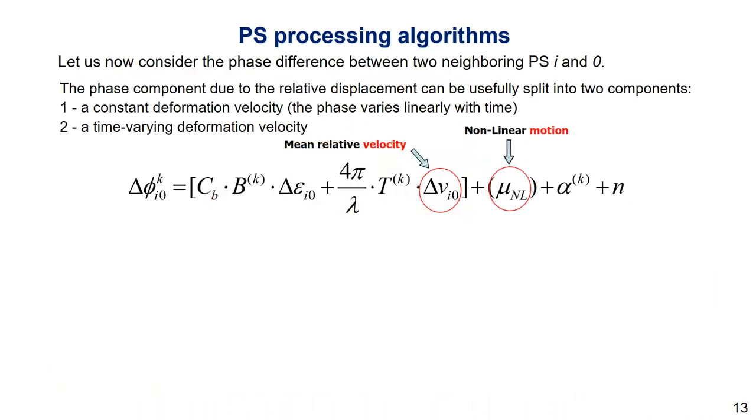Let us consider the phase difference between two neighboring PS, for example target i and o, which can be written in this form. Where we have here is the relative elevation errors. This is the constant related to phase to height. And here is the deformation information we can decompose in two components. The first component is the linear component, and the other one is non-linear component, and the atmosphere and noise.